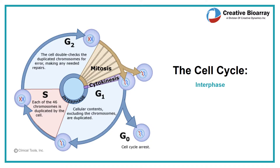During S phase, DNA is synthesized. After S phase, a chromosome is composed of two identical molecules of DNA called sister chromatids. During the G2 phase, the cell gets ready to go through mitosis, setting up all of the components that the cell will need to divide — in particular, the machinery to separate the two strands of DNA in each chromosome from each other.